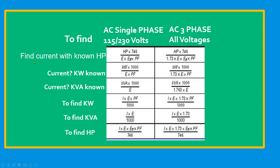For example, find the current with known horsepower. If we are going to find the current with a known horsepower, for example, seven horsepower. So we have seven horsepower here. We're just going to multiply it with 746 because we know that one horsepower equals 746 watts.